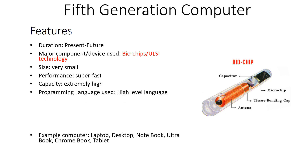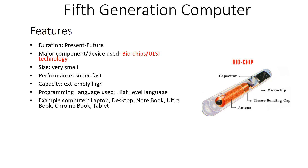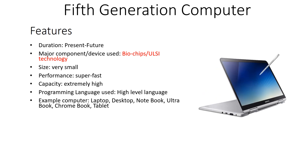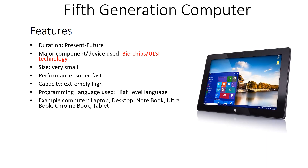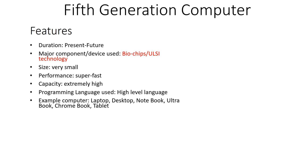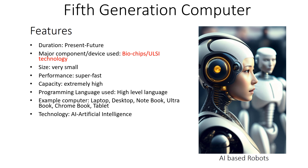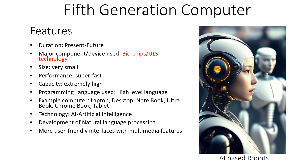Fifth generation computers use high-level programming languages. Examples include laptops, desktops, notebooks, ultrabooks, Chromebooks, and tablets. These computers are based on artificial intelligence technology — for example, AI-based robots. They also support natural language processing and can understand human languages.